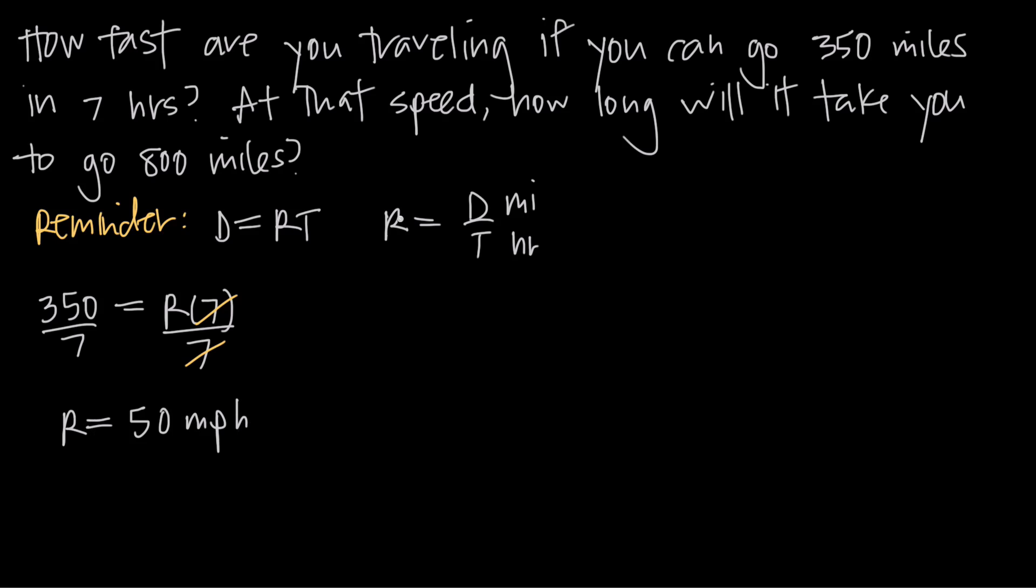So then the second half of the problem says, at that speed, how long will it take you to go 800 miles? So if our speed is 50 miles an hour, we can just plug this back into our distance formula, along with 800 miles, and find the time.